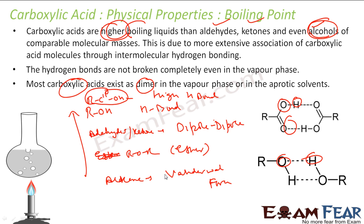So please understand: when you are given four or five compounds with comparable molecular mass, carboxylic acid will have the highest boiling point because the extent of hydrogen bonding is very, very high. Then it will be alcohol, then aldehyde and ketone, then ether, and then alkanes.